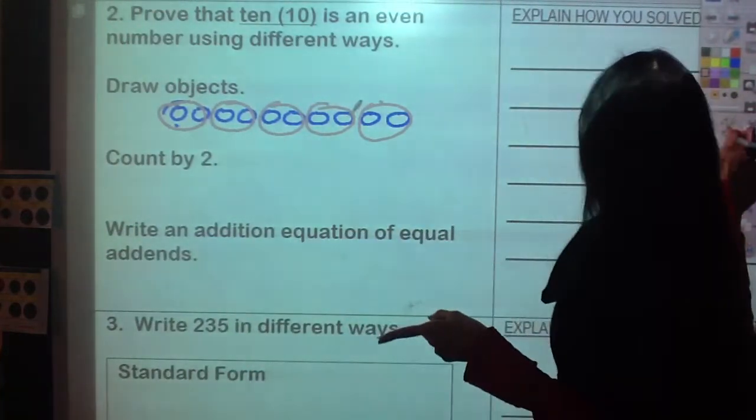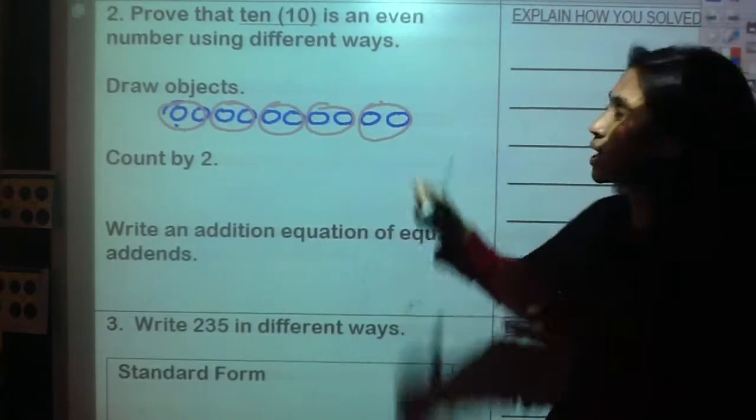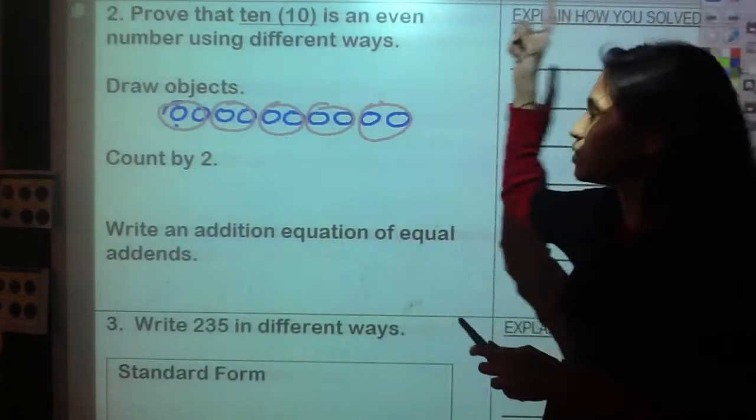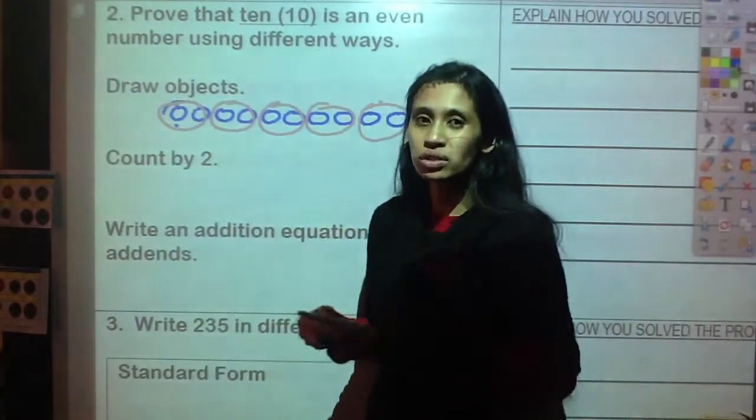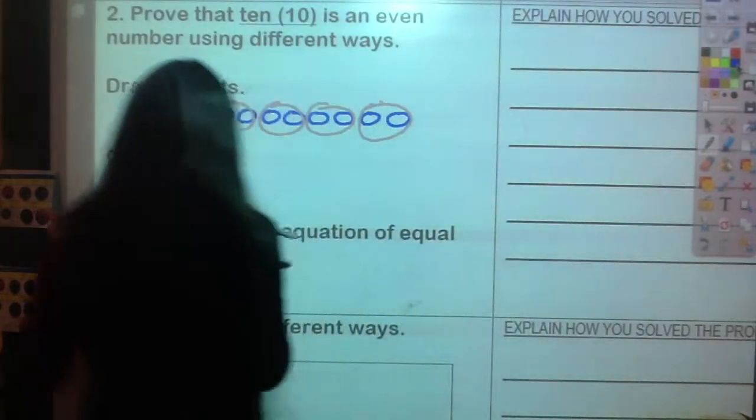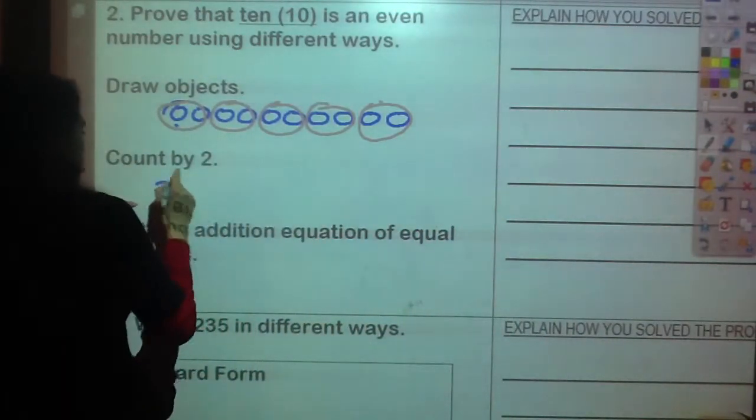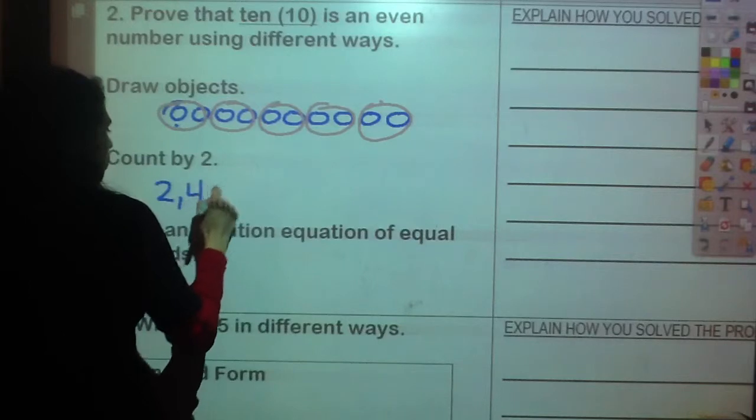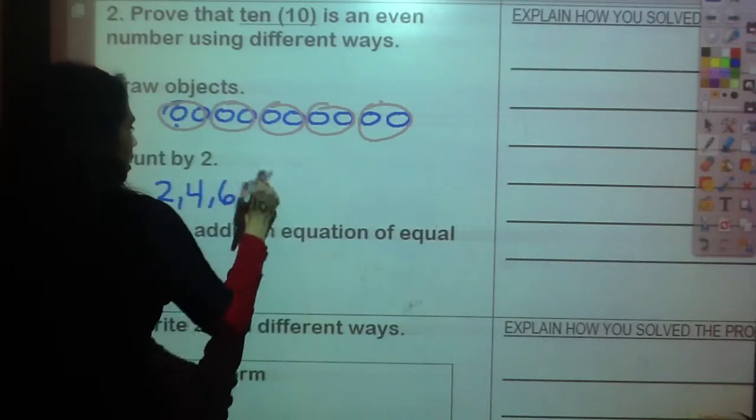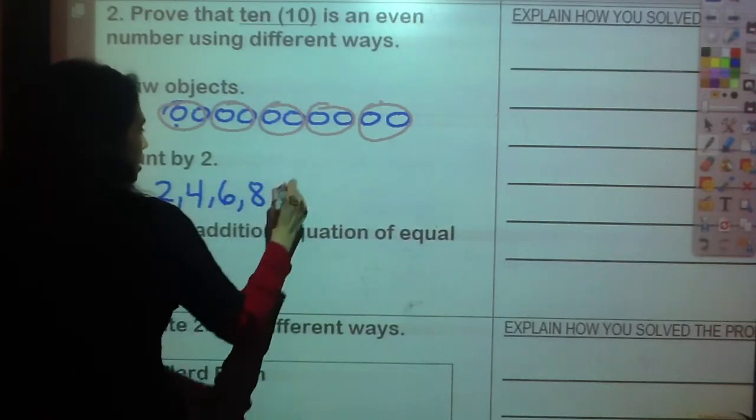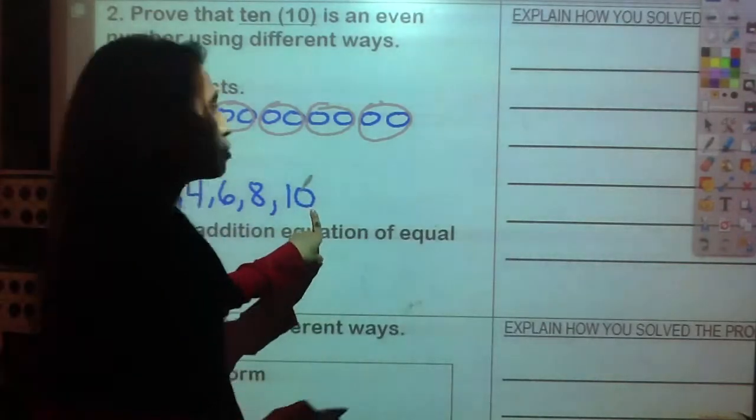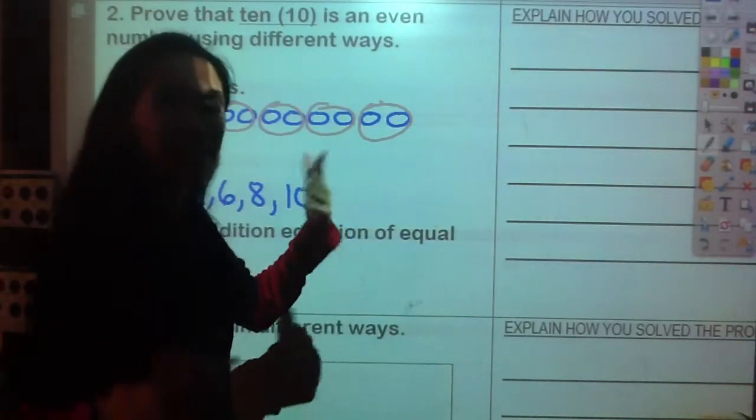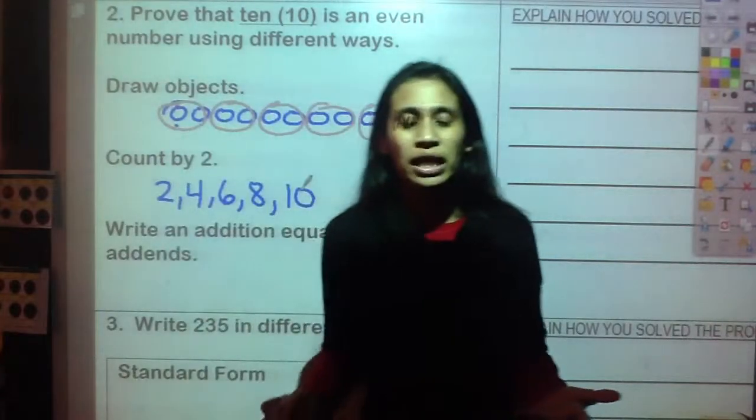Now the next strategy, the next way we prove that ten is even, is counting by twos. I know you know how to count by twos. Count by twos with me and write it down: two, four, six, eight, and ten. Ten is right there, so that means that number is an even number.